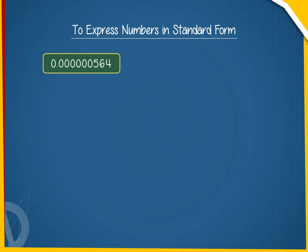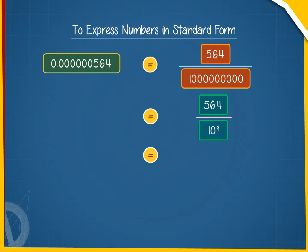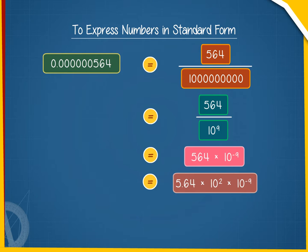(b) 0.000000564 = 564 ÷ 1,000,000,000 = 564 ÷ 10⁹ = 564 × 10⁻⁹ = 5.64 × 10⁻⁷.